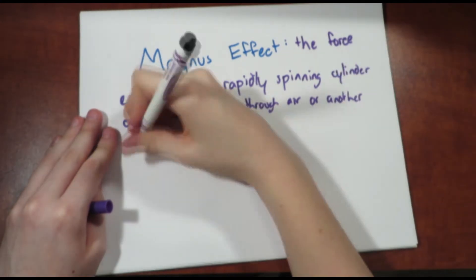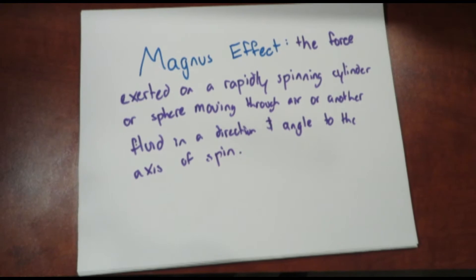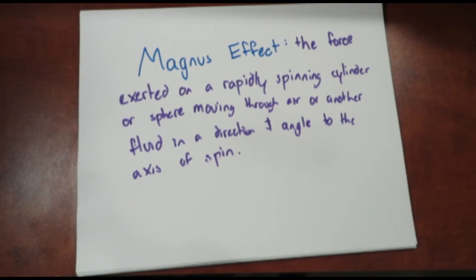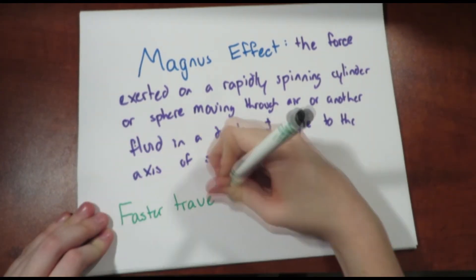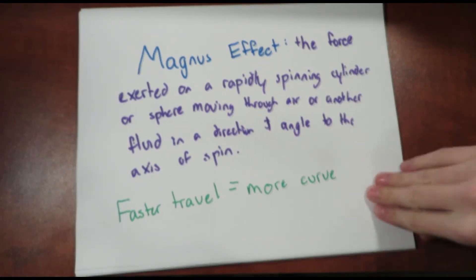This is a mistake many young pitchers make when throwing curveballs. As the Magnus effect implies, the faster the ball is traveling, the more spin and therefore more curve it would have. So actually, if you want the ball to curve, the velocity you throw it at is very important.